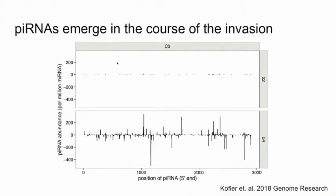We see that piRNAs are emerging rapidly. These are piRNAs mapping to the P element. At generation 2 in cold conditions there is nothing — no piRNAs. But when you look at generation 54, they are everywhere. This means the piRNAs are emerging all over the P element within a very short time.